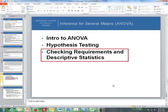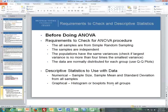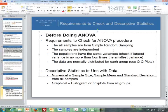Now the last thing we're going to talk about is checking requirements and descriptive statistics. Before doing ANOVA, there are certain requirements that we need to check. First, all the samples are from simple random sampling, so when you do the sampling, you have to make sure it's simple random sampling. The samples are independent rather than dependent, where basically whatever is in one sample tells you nothing about what's in the other samples.